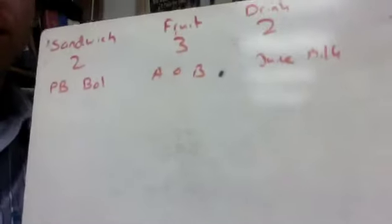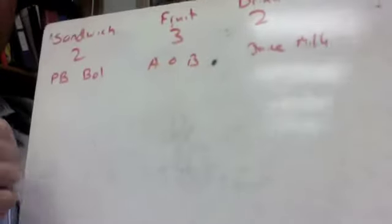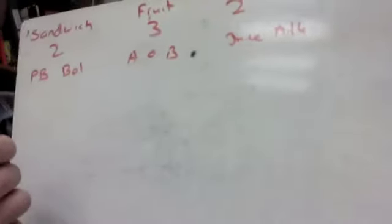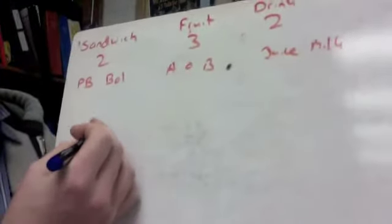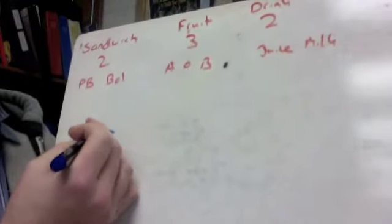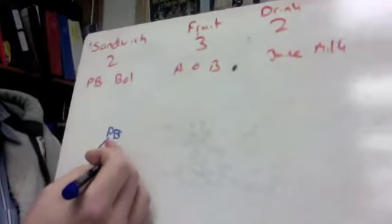All we want to know for number two is how many possible outcomes we could have, how many possible choices at the end, so we're going to make a tree diagram. We'll start off with the sandwiches and there's two choices. We've got peanut butter and we've got bologna.